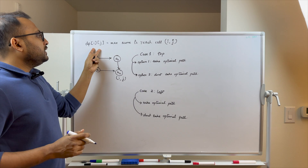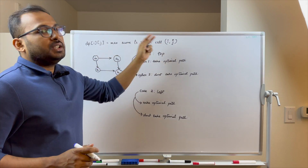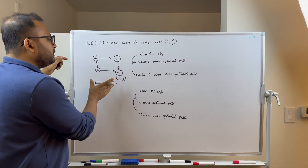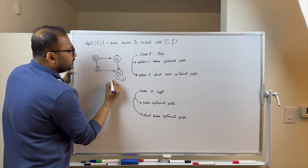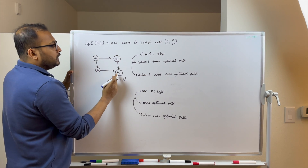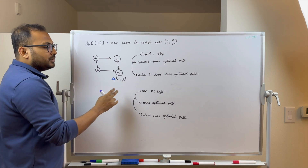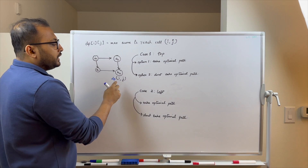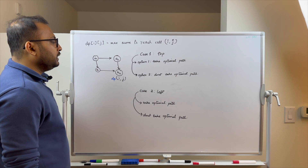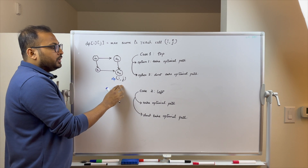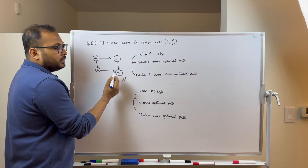dp[i][j] stores the maximum score to reach cell (i, j). In the 2×2 example, dp stores the best achievable score if we end at that cell. A cell can only be reached from the top or from the left.